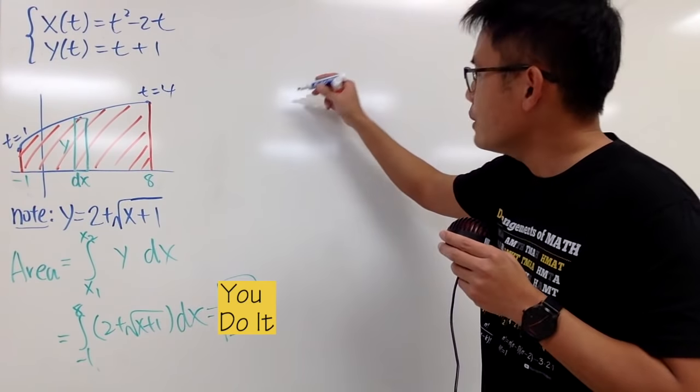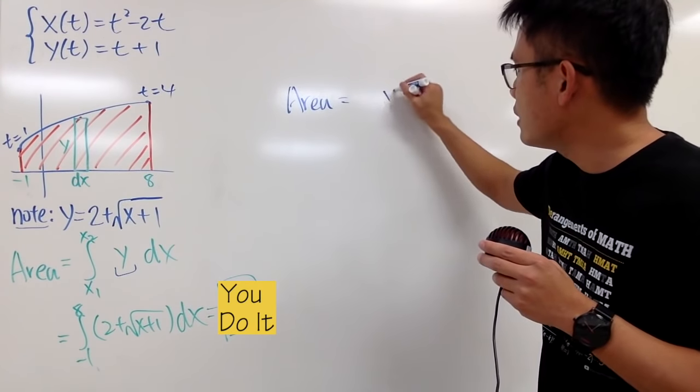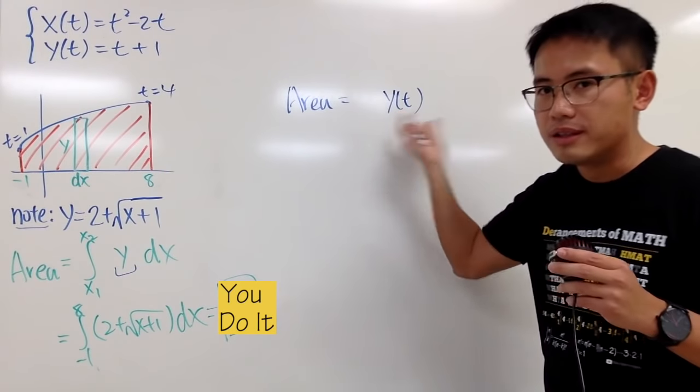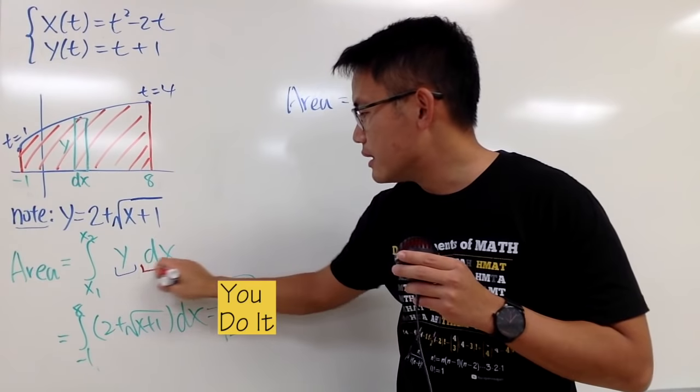I will still write down the area. And it is still going to be the idea y times dx. But this time, y right here, it's a function of t. So, I will put down y of t right here. And we are about to enter the t plus 1 for this. Okay? And then, the next thing is, what is dx though?